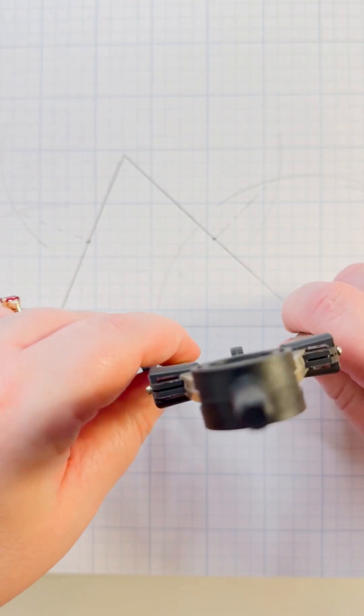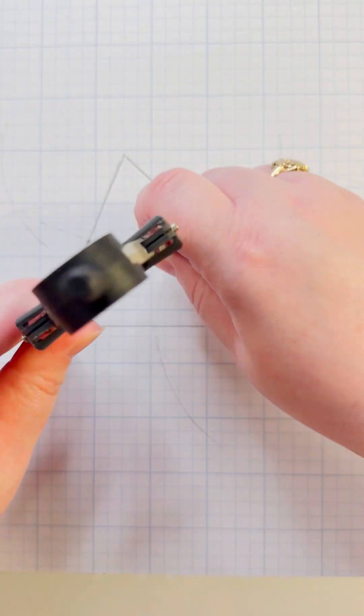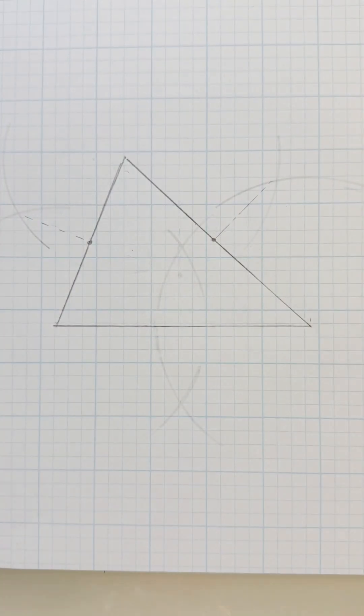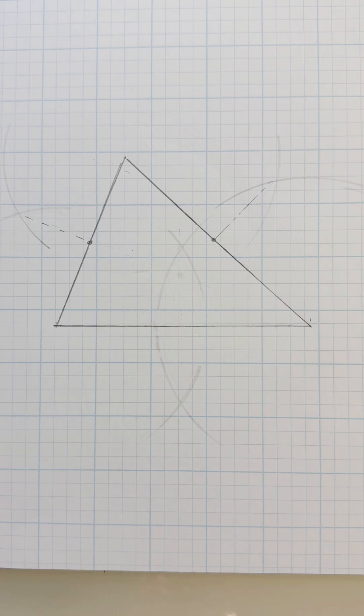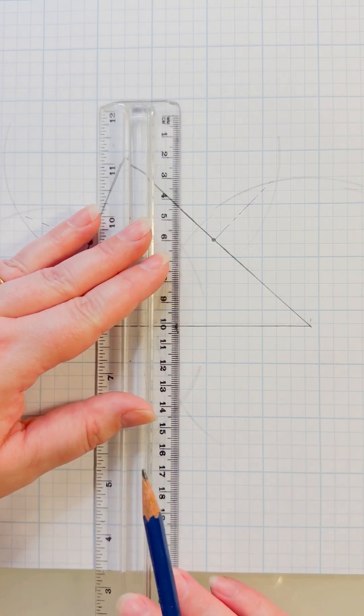You're going to have to adjust your compass for each one unless they're the same size. If you have an equilateral or isosceles triangle you won't need to. Okay, line up where this arc and this arc intersect.